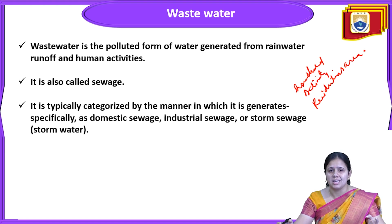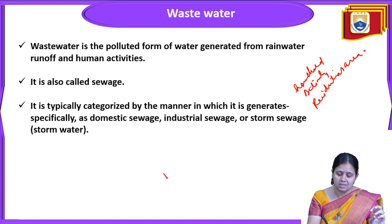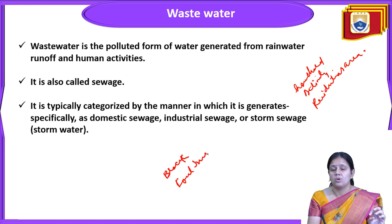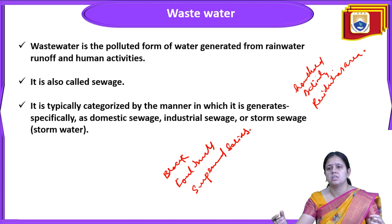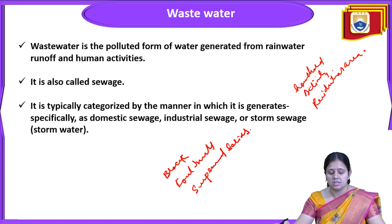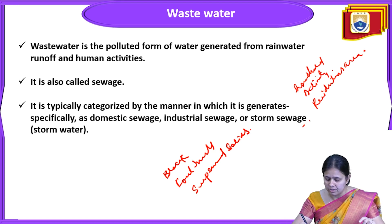Wastewater is a polluted form of water — the water which is not clean, which may have a black or non-transparent color. There may be a smell, or some suspended particulate matter and suspended solids present. This type of water is called wastewater, dirty water, or sewage. It is typically categorized by the manner in which it is generated — as domestic sewage, industrial sewage, or stormwater.